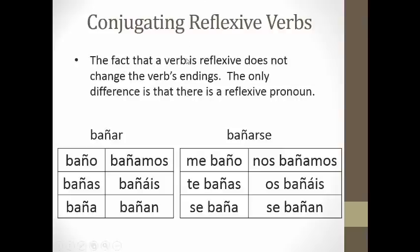A final note: remember, just because the verb is reflexive, that does not change the way you conjugate the verb. Here's BAÑAR conjugated non-reflexively, and here it is conjugated reflexively. Both conjugations are in the present tense, and the only difference between them is the reflexive pronoun. So: I bathe the dog — BAÑO AL PERRO. I bathe myself — ME BAÑO.